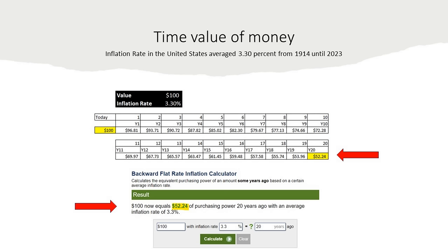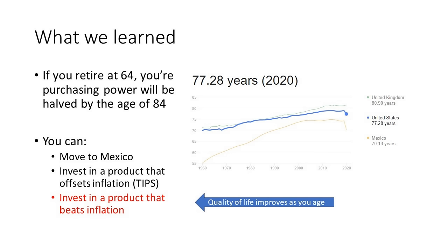We can check our math using a backward flat-rate inflation calculator: $100, inflation rate 3.3%, 20 years ago — click calculate, and it tells you almost the exact same number. This is a problem. If you have a fixed income in retirement — your advisor tells you to invest in bonds, you're getting social security — your quality of life is decreasing over time. If you retire at the age of 64, your purchasing power is going to be halved by the age of 84. That's a big problem. Life expectancy: United Kingdom, about 81 years; U.S., 77; Mexico, 70. So how can you solve this problem?